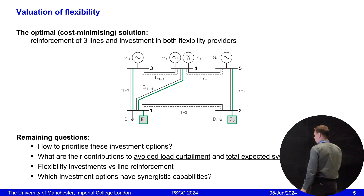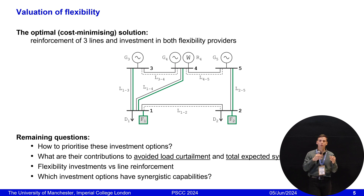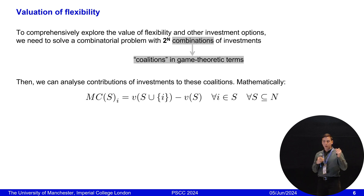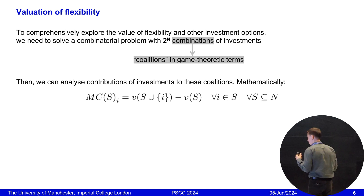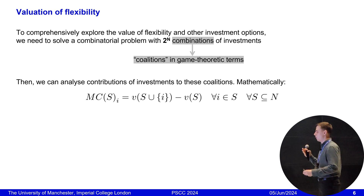An interesting question is: do we have any investments with synergies? By synergies, I mean investment options that bring benefits not only on their own, but also in combination with other options. If we can identify such investments, we should probably prioritize them. To comprehensively estimate the value of our resources, we need to solve a combinatorial problem with 2 to the power of n combinations of investments. We were inspired by game theoretic studies where such combinations are called coalitions. So we are studying coalitions of investments — we can call them players.